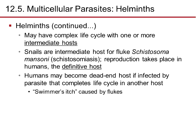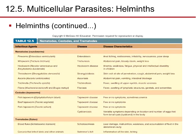Helminths may have complex life cycles with more than one intermediate host. For instance, snails are intermediate hosts for the fluke Schistosoma mansoni, which causes schistosomiasis; reproduction takes place in humans, the definitive hosts. Humans may also become dead-end hosts if affected by parasites that complete their life cycle in another host — for instance, swimmer's itch caused by water flukes.